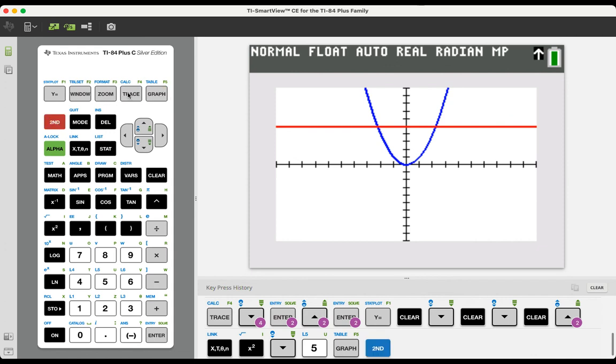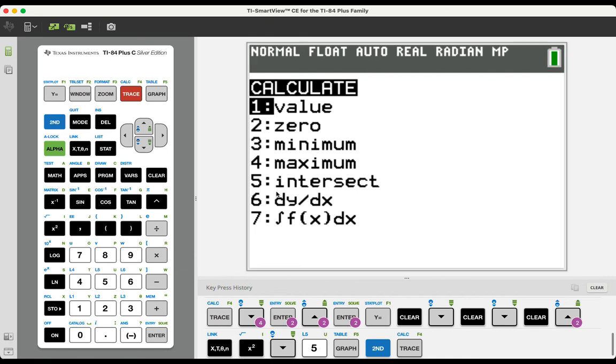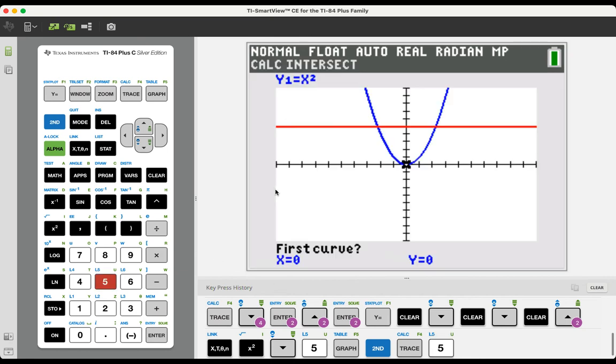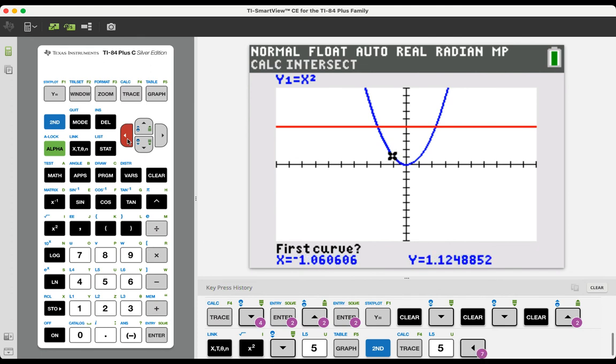And if we look for the intersection point, just like we had previously, and we choose option number five, the parabola will be my first curve, and the line will be my second curve. But now the guess matters, because if I put the guess near the intersection point that's on the left, I get that solution.